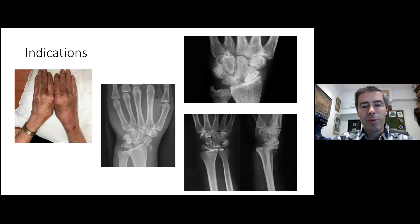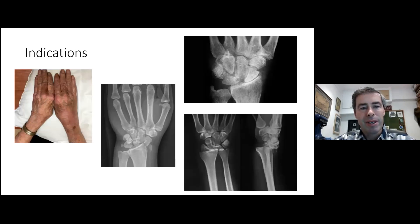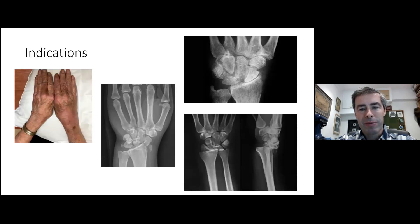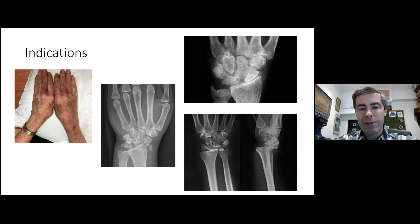There are several reasons to approach the wrist from the back rather than the front. Infection is a good reason to open the wrist joint and drain it, either arthroscopically or open, as well as post-infection reconstruction. Trans-scaphoid peri-lunate dislocations or other major traumas — wrist dislocations as discussed previously — are also indications.